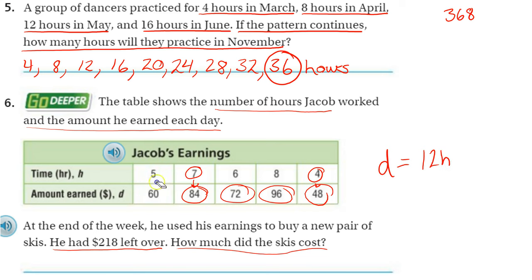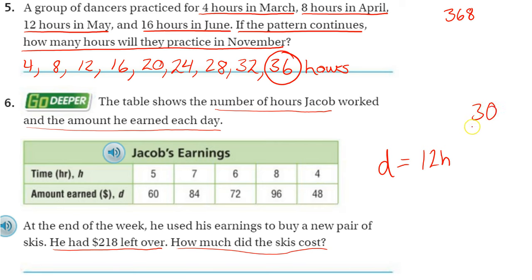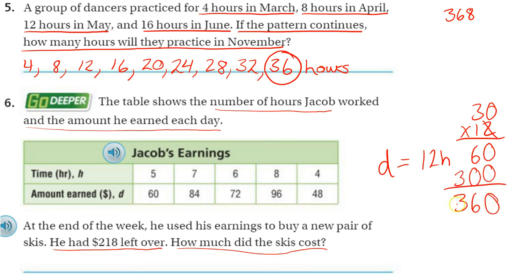Now I can add the smaller numbers rather than the bigger dollar amounts. So 5 plus 7 is 12, plus 6 is 18, plus 8 would be 26, plus 4 would be 30. So 30 times 12: 2 times 0 is 0, 2 times 3 is 6, 0 placeholder, 1 times 0 is 0, 1 times 3 is 3 — 360 bucks.